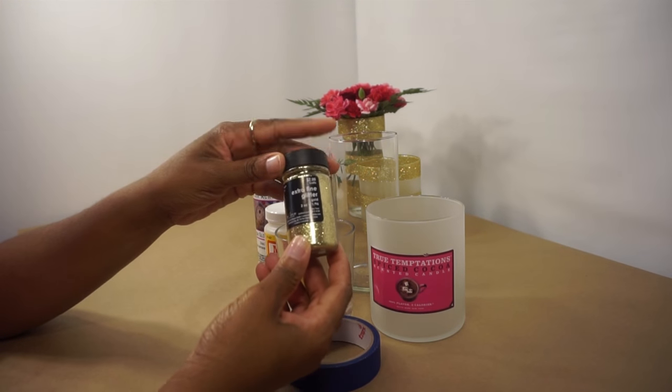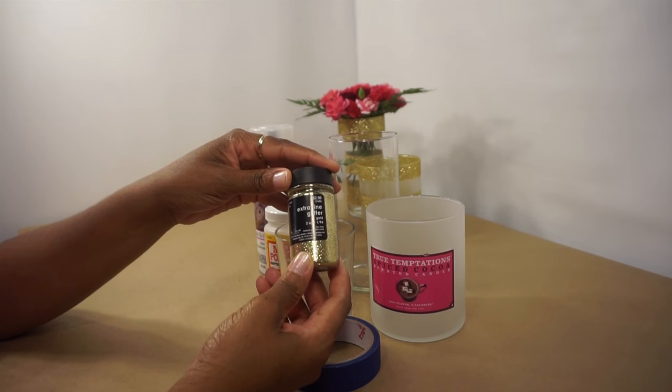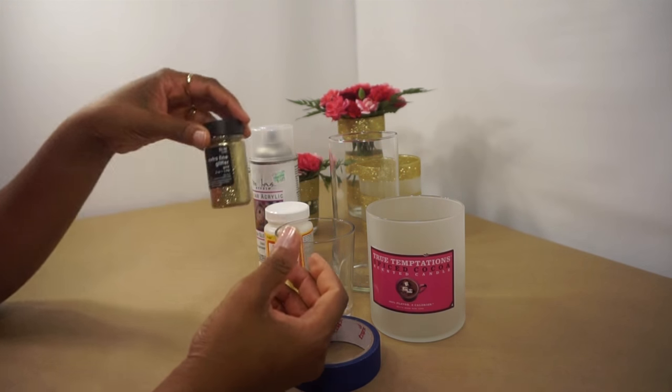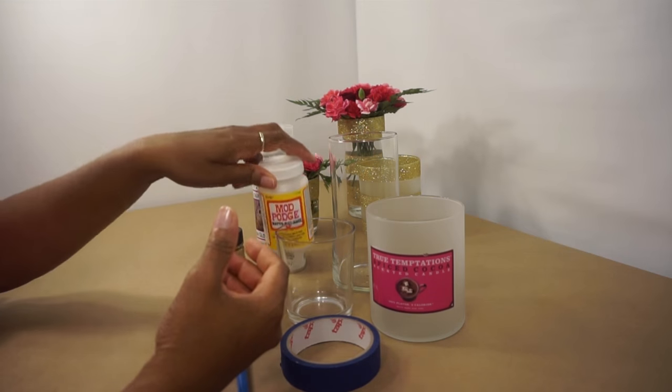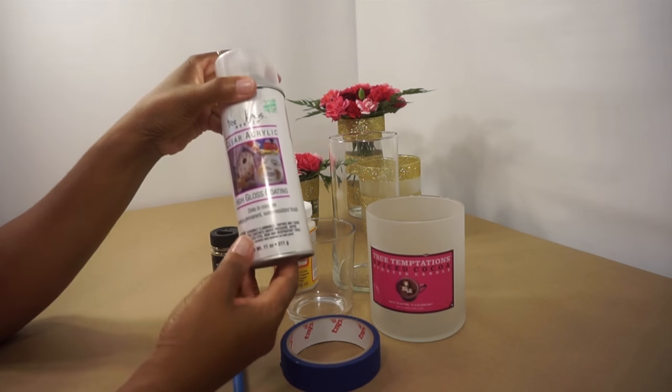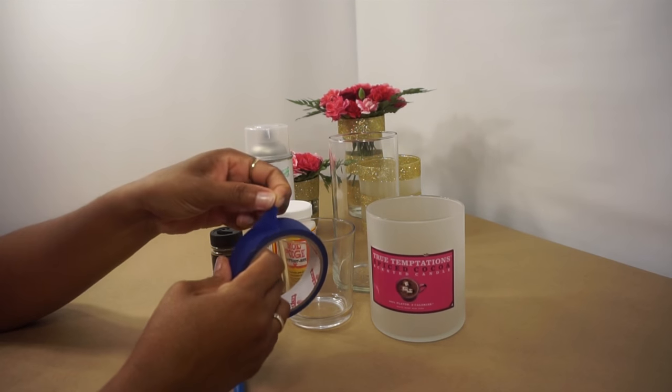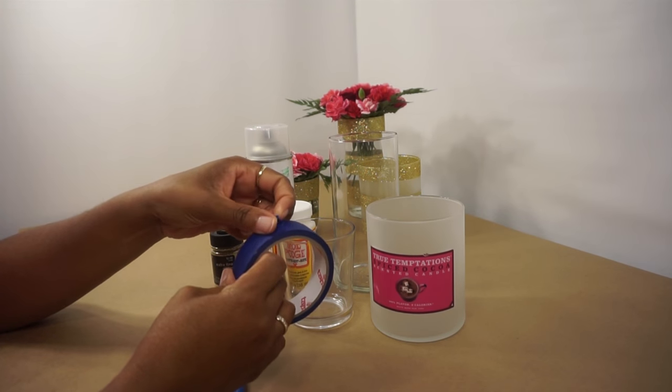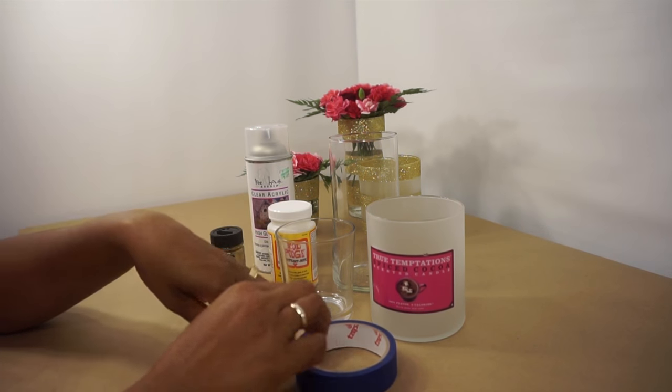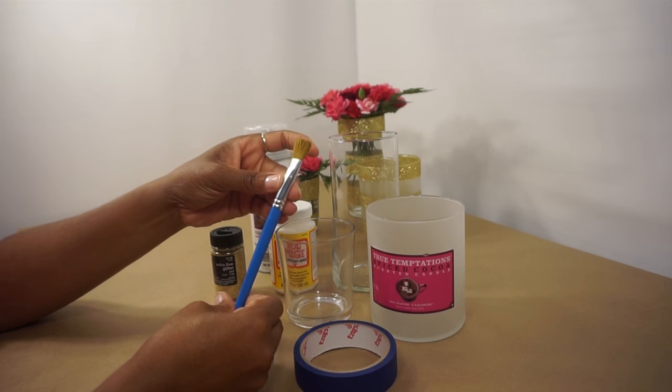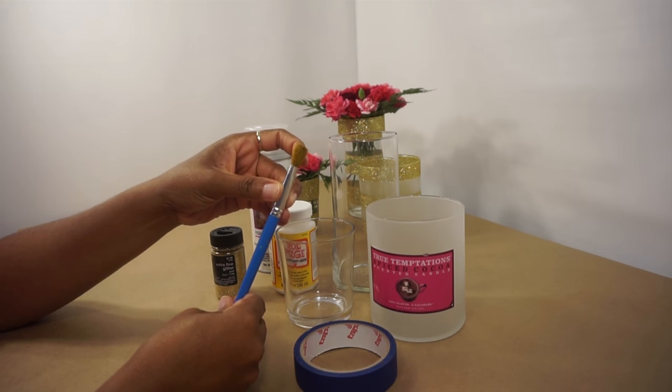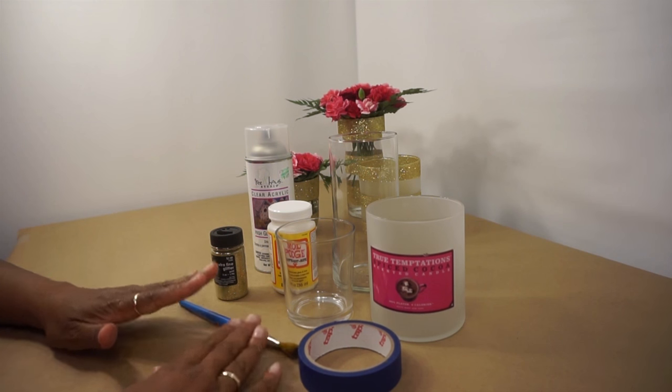Next you will need extra fine glitter. I like to use extra fine because it looks more professional. Then we have our Mod Podge and our clear gloss acrylic. We have our painter's tape that doesn't stick to the glitter nor does it leave tape residue on your glass. And finally a three-fourths brush. And that's all you need. So are we ready for this very quick and easy project? And you come back in about two shakes. And we'll get started with our first step. See you soon.